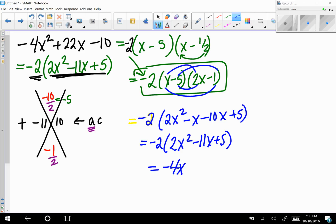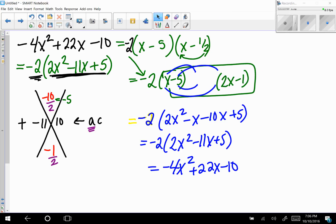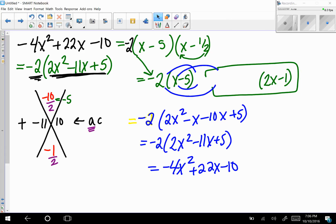Distributing that two does indeed give us negative four x squared plus 22 x minus 10, which just proves that this beautiful guy over here is indeed the true factored solution.